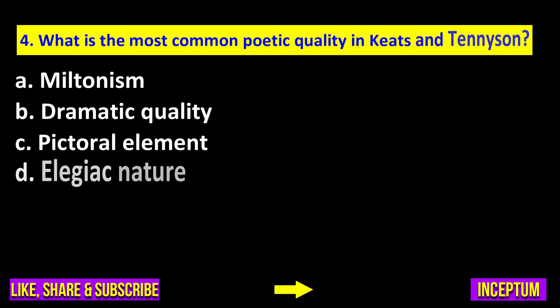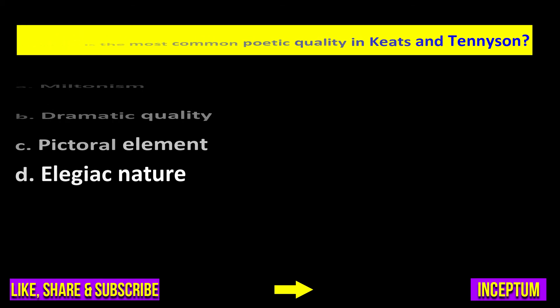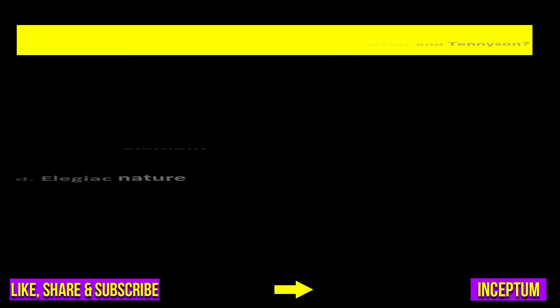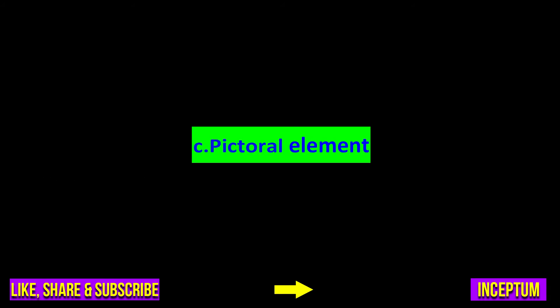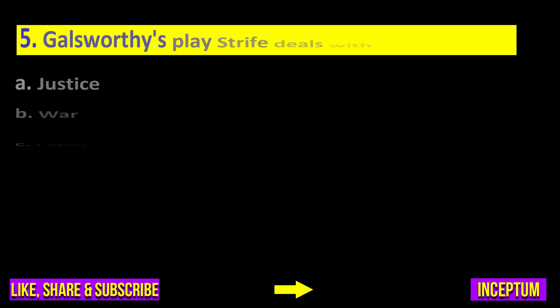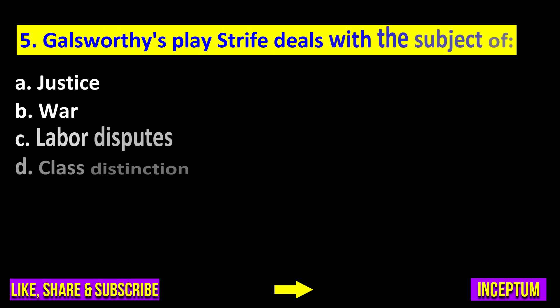Question number four: What is the most common poetic quality in Keats and Tennyson — militantism, dramatic quality, pictorial element, or alleged nature? The right answer is option C: pictorial element.